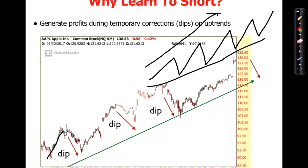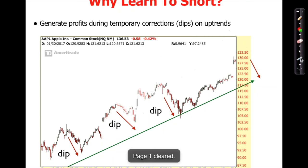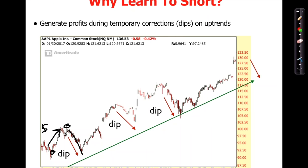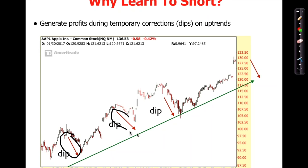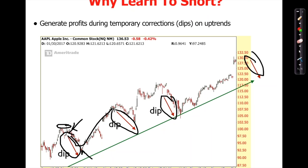This is Apple on an uptrend — it goes up and through a dip or retracement, up, retracement, up, retracement. Most amateurs buy here and sell here making the profit, but then during the dip they could lose all that profit. You could also short sell during the retracement — sell here and buy it back before the uptrend continues. We call this counter-trend trading: generating small profits along the way during temporary corrections or dips.